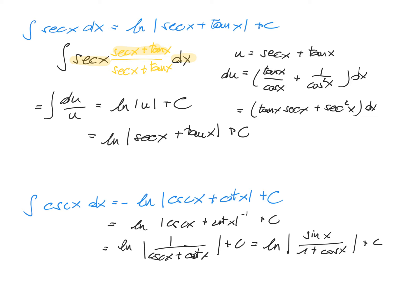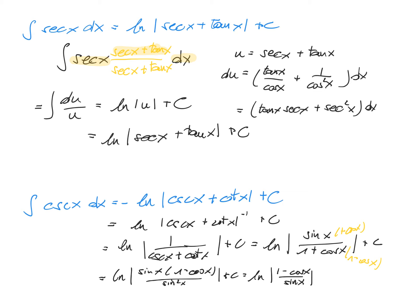We then multiply the numerator and denominator by 1 minus cosine x. This gives ln of sine of x times 1 minus cosine of x divided by 1 minus cosine squared, which is sine squared of x. Dividing out one of the sines gives ln of 1 minus cosine x divided by sine of x plus a constant. Or equivalently, ln of cosecant of x minus cotangent of x plus a constant.